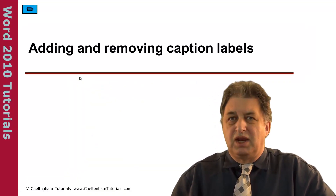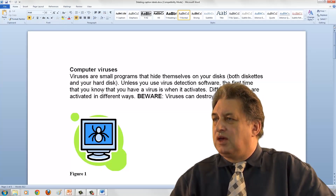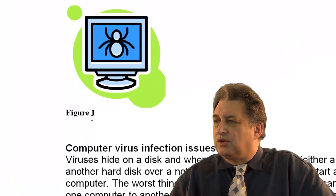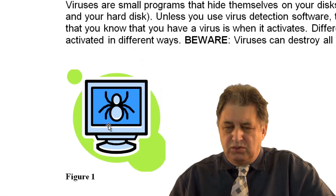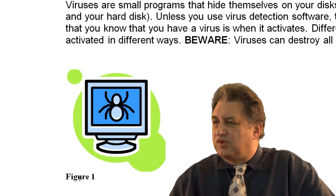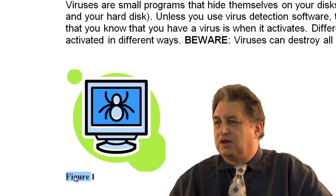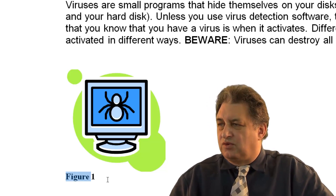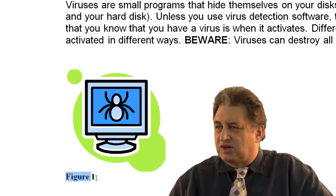Adding and removing caption labels. Here we've got a document and it's already got a caption inserted into it. So if I want to remove this label where it says Figure, I can select it. Now normally when you want to select something you can double click on it — but as we'll see in a minute, this is not the correct way to do it in this case. We need to select the whole thing, because as you can see, the word Figure is selected but this number isn't.